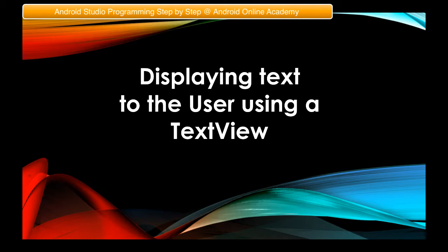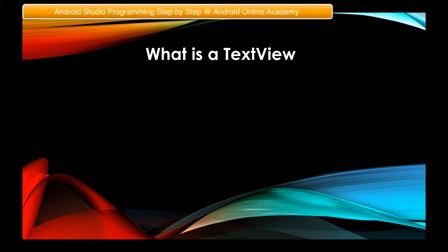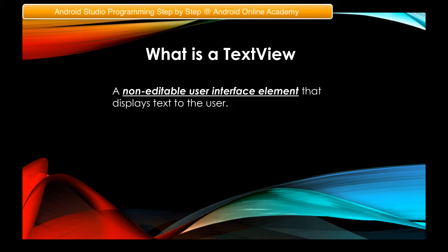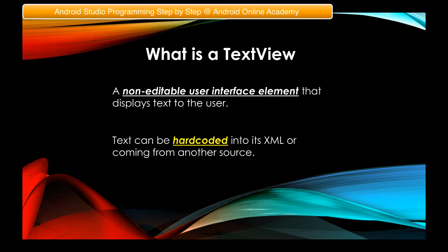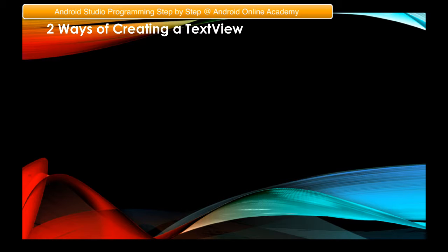Our topic for today is displaying text to the user using a TextView. A TextView is a non-editable user interface element that displays text to the user. The text inside a TextView can be hard-coded into its XML, or it can come from another source — such as a strings resource inside Android Studio, a text file in the assets folder, or an online database like a PHP/MySQL database or Google's Firebase.